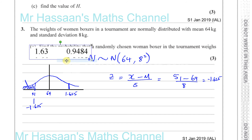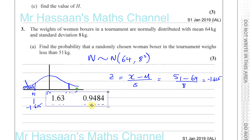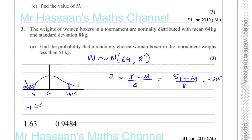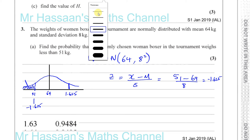So 1.63 gives us the value 0.9484. What does this mean? The z-value is the standardized value, and the table gives the area under the bell curve to the left of this z-value. So 0.9484 is the area to the left of z = 1.63.